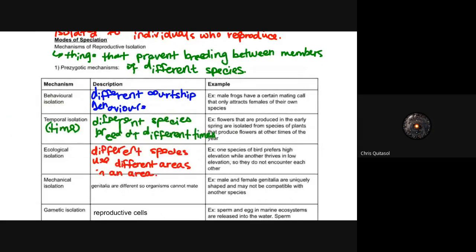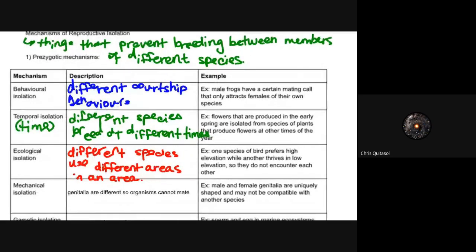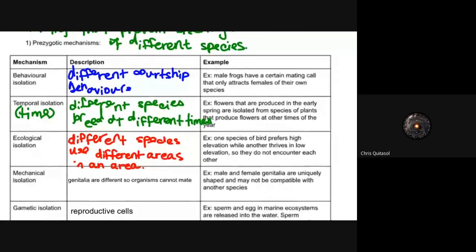There are two different ways we will look at modes of speciation that prevent other species from reproducing with each other. The first is called pre-zygotic mechanisms. We're looking at methods before conception, before the child or species is conceived.